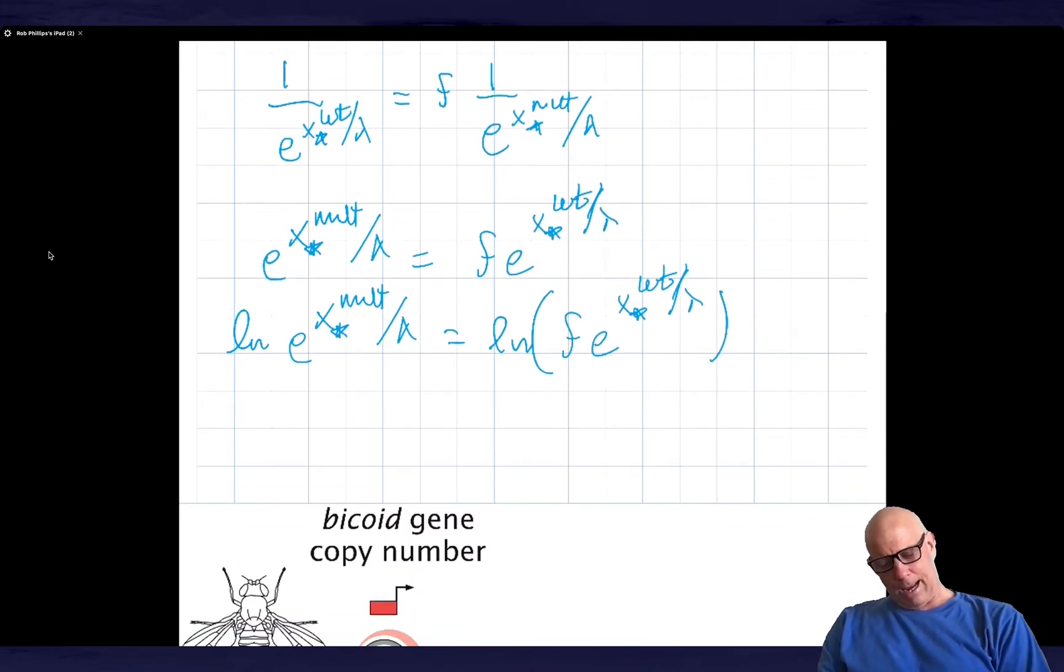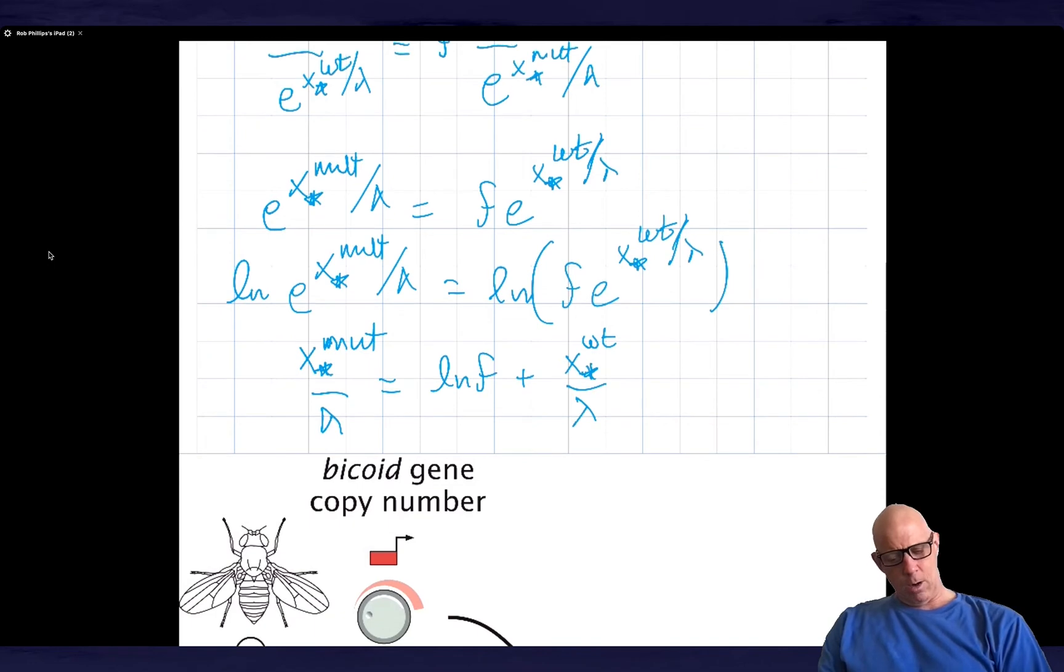And that tells me that x star mutant over lambda is equal to... Wait. I'm being sloppy here. Sorry. Log of f plus x star wild type divided by lambda.